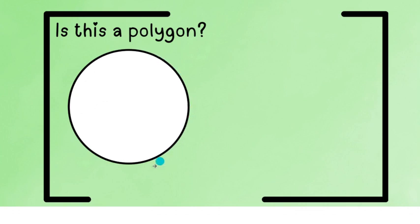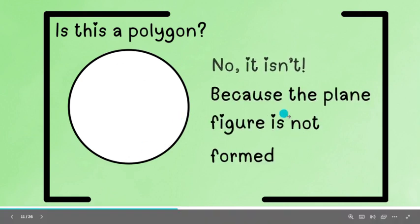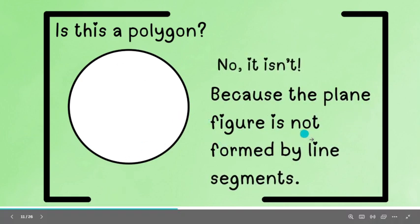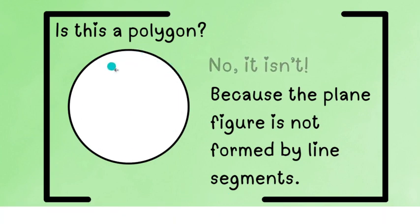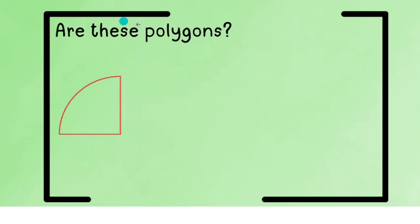Right, next, we have this circle. Is a circle a polygon? No, it isn't. Because the plane figure is not formed by line segments. So, hindi naman line siya. Naka-curve siya. Close nga siya, pero hindi siya line segments.